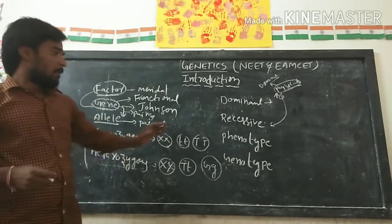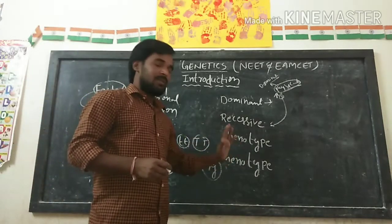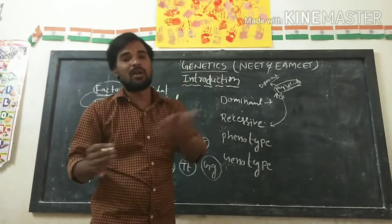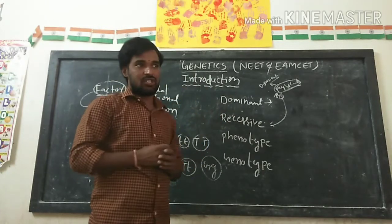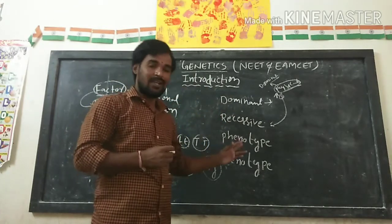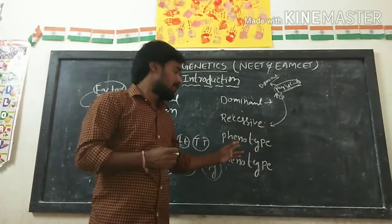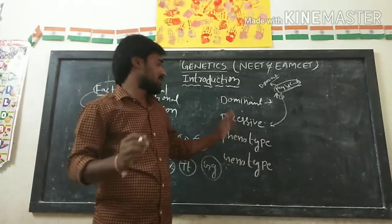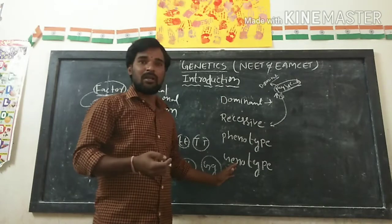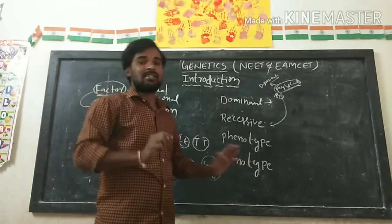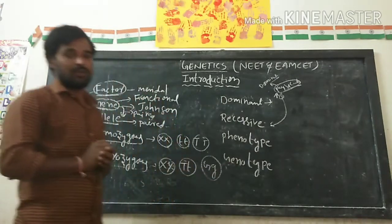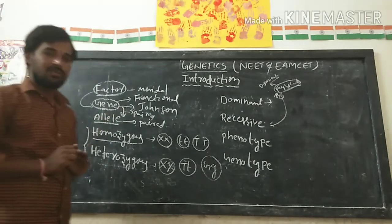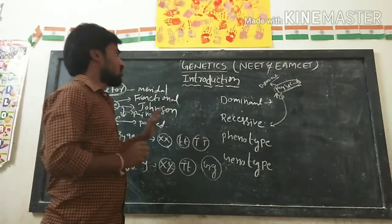Phenotype is nothing but physical appearance — the physically visible outside character — also called as the phenotype. The physically visible appearance character is called as the phenotype. The genetic makeup character present internally is called as the genotype.